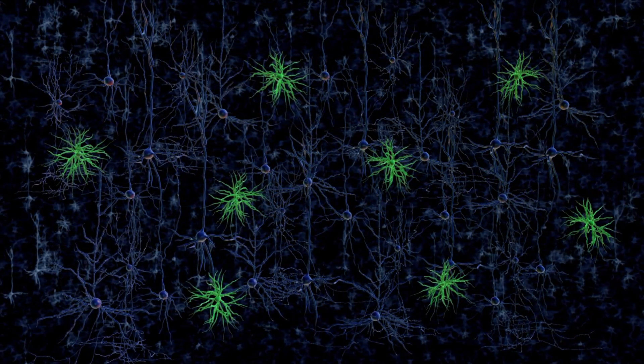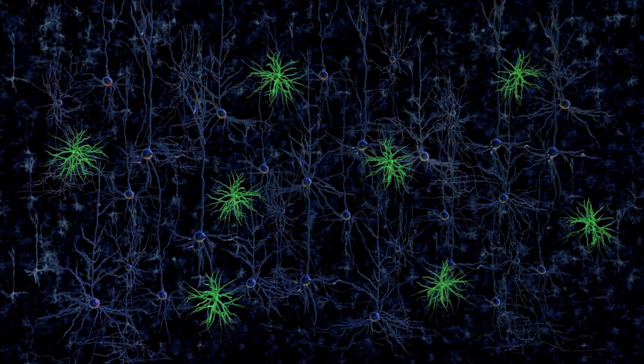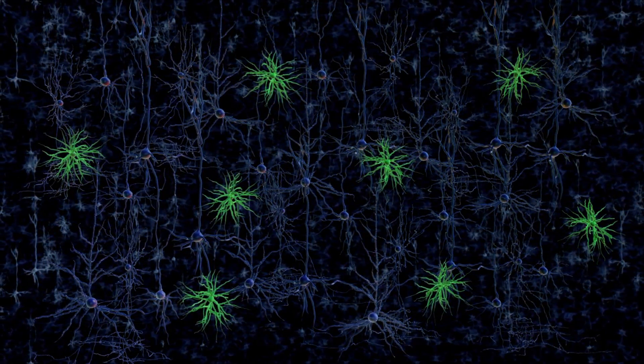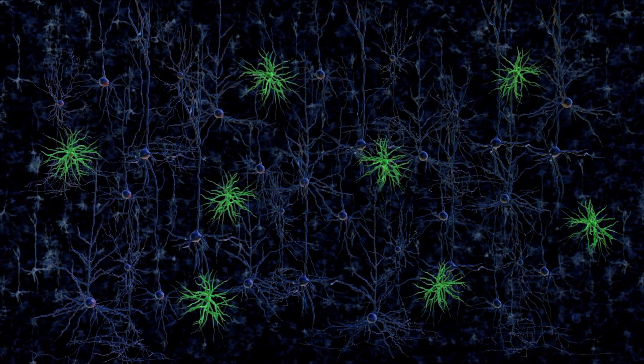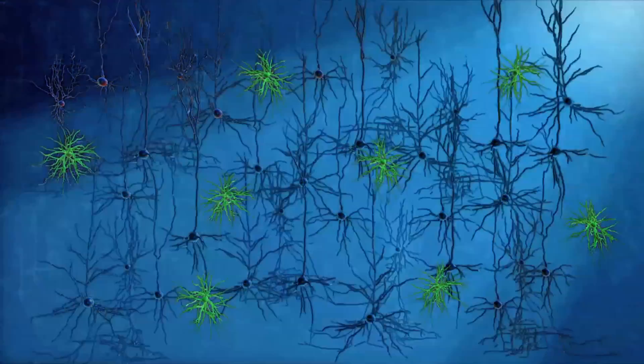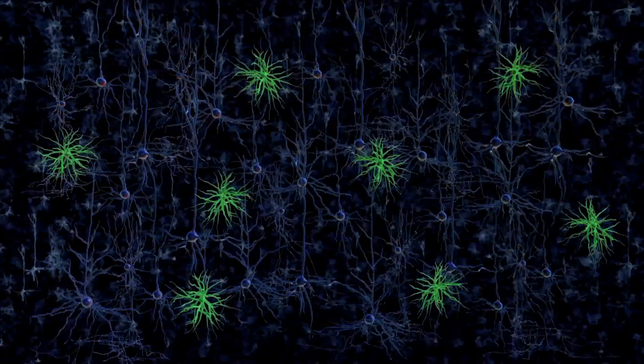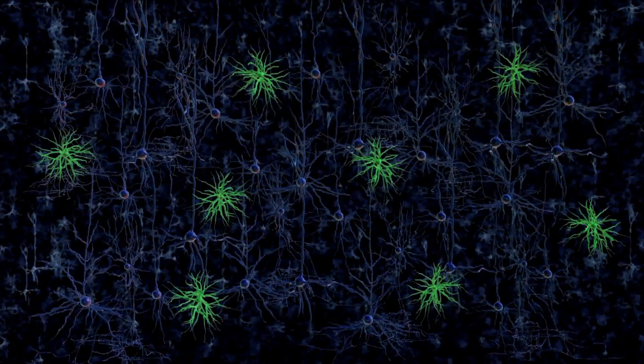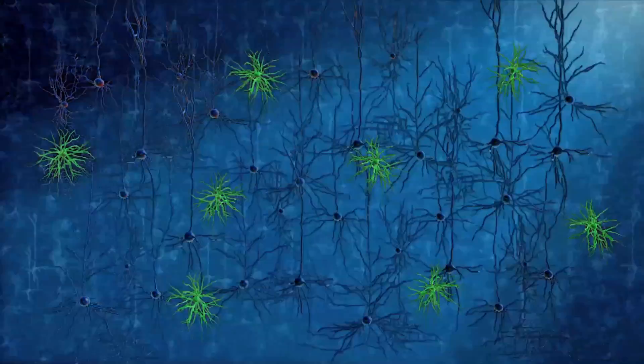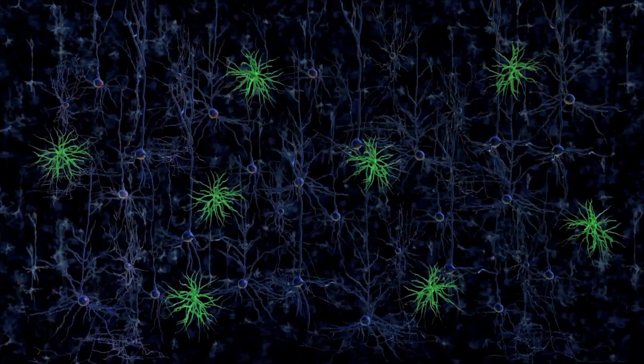For example, researchers can deliver the piece of DNA that encodes for channelrhodopsin into a set of basket cells, shown here in green. Then, pulses of blue light activate only the basket cells, while the other cells, for example, the neighboring pyramidal cells, are not affected.